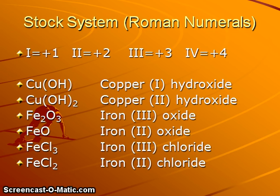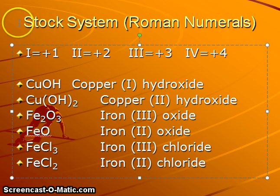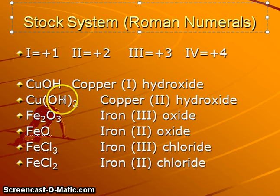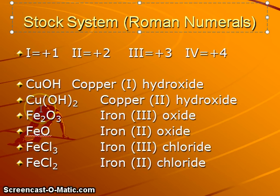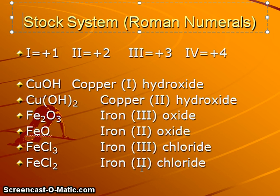The stock system uses roman numerals to indicate the charge of transition metals or other metals which have more than one possible oxidation state. Copper one hydroxide contains a copper plus one ion, so it will be in a one-to-one ratio with hydroxide and should not include parentheses. If we need more than one copy of a polyatomic ion, we will use parentheses. Copper two has a positive two charge balanced by two copies of the minus one hydroxide ion. Iron three oxide indicates iron with a plus three charge; oxide has minus two. Iron three chloride gives FeCl₃; iron two chloride gives FeCl₂.